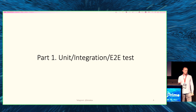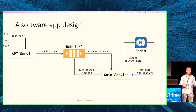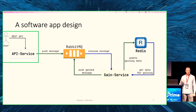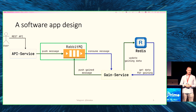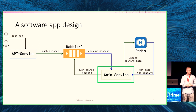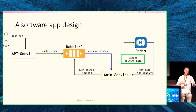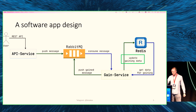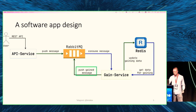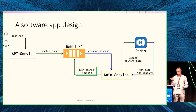Part one: unit, integration, and E2E tests. Let me quickly describe the system I'll use throughout the talk. We have a REST API service that accepts HTTP requests and pushes messages to some message broker — it could be RabbitMQ, Kafka, Apache Pulsar, doesn't matter. Then there is a gain service that consumes messages from RabbitMQ, and depending on the message content, either updates gaining data in Redis or enriches the message and pushes it back to RabbitMQ. Two microservices, a message broker, and a cache — that's basically it.